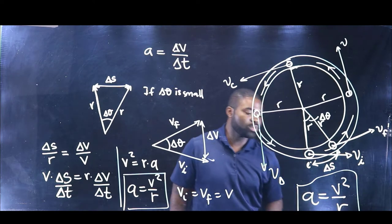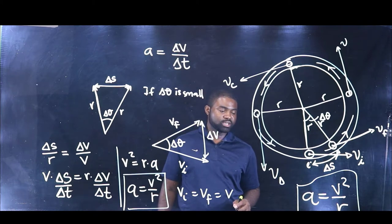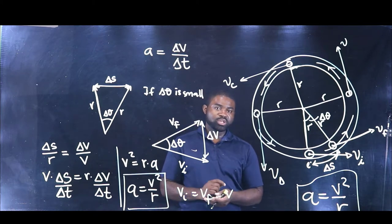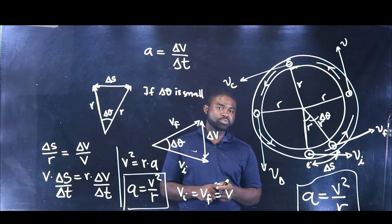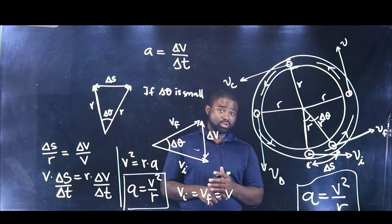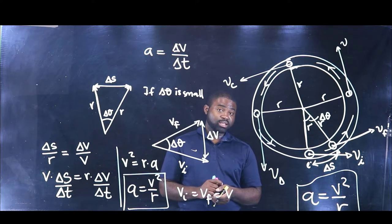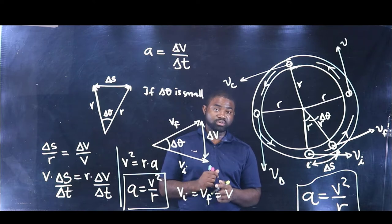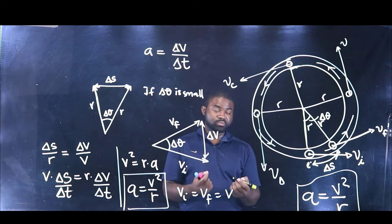This is what we call the acceleration of a particle moving in a uniform circle. But just as we know, acceleration is a vector quantity, which means it has both a magnitude and a direction. So the million-dollar question is: what then is the direction of the acceleration of a particle moving around in a circle, and how do we determine that?